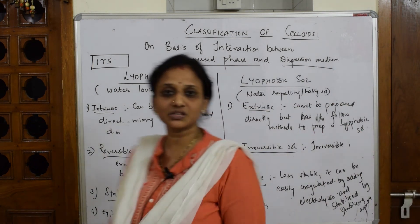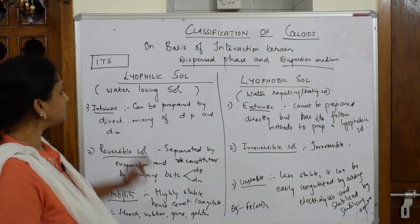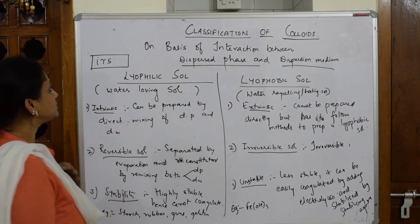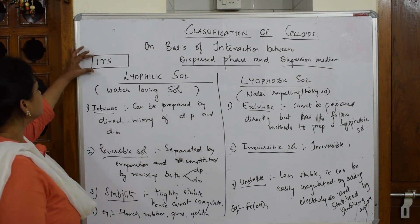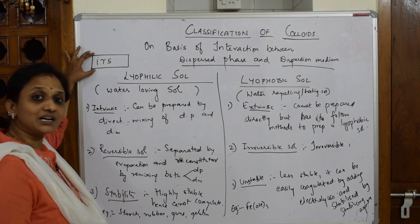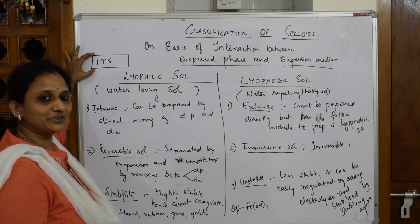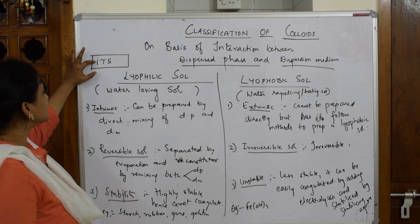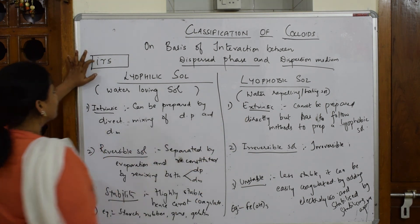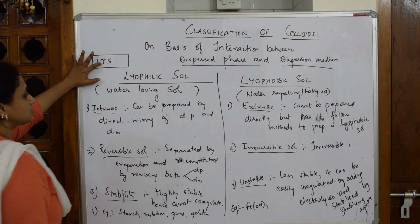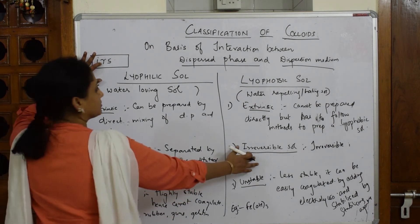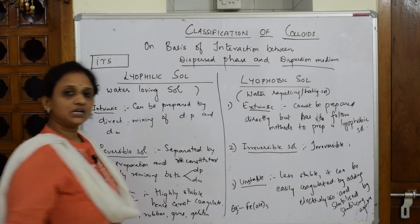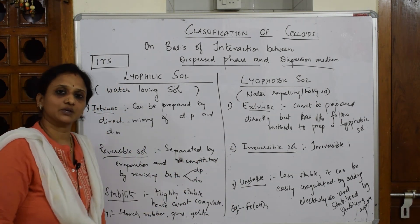So remember the word IRS whenever lyophilic and lyophobic is asked: I stands for Intrinsic — opposite Extrinsic; R stands for Reversible — opposite Irreversible; S stands for Stable — opposite Unstable. Remember one example for each and you're good to go.